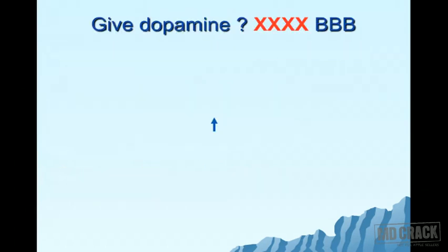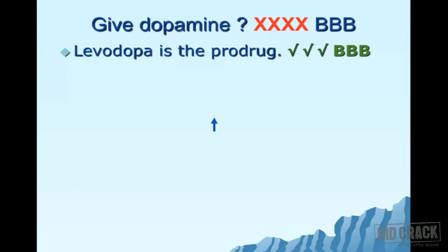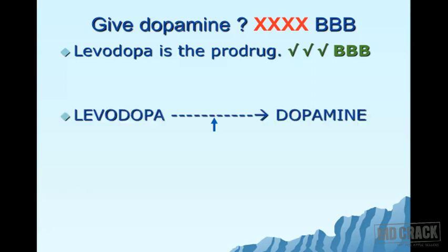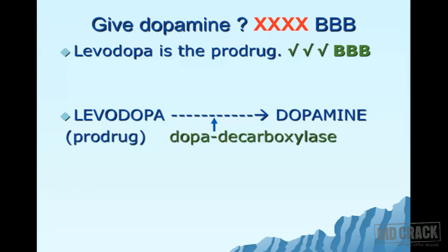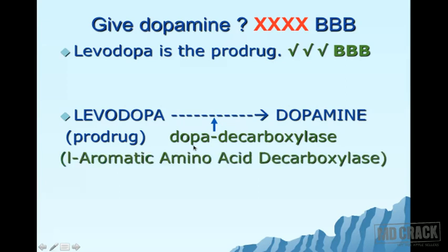Since there is dopamine deficiency, why not give dopamine directly? Dopamine cannot cross the blood-brain barrier. Instead, levodopa is used — a prodrug and precursor of dopamine. Levodopa crosses the blood-brain barrier and is then converted into dopamine by the enzyme dopa decarboxylase, also called L-aromatic amino acid decarboxylase (AAAD).